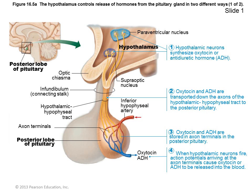The pituitary gland (hypophysis) and hypothalamus are very interesting. The pituitary gland has two major lobes: the posterior pituitary lobe, which is neural tissue whose axons terminate in the posterior pituitary, and the anterior pituitary, which is glandular tissue that secretes hormones. They are of completely different origins.